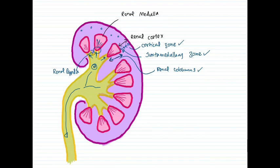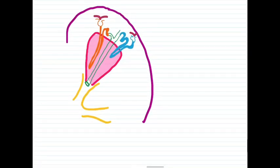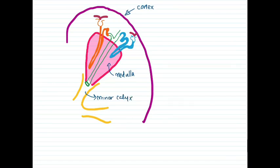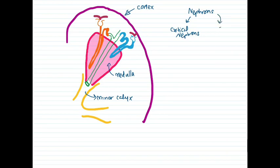The main structural and functional unit of the kidney is the nephron. There are two types of nephrons in our urinary system. The first main type is the cortical nephron and the second type is the juxtamedullary nephron.